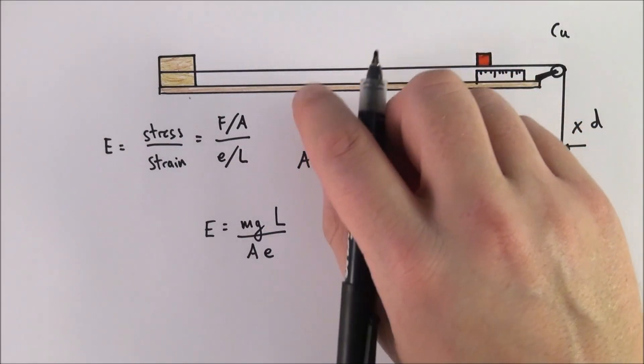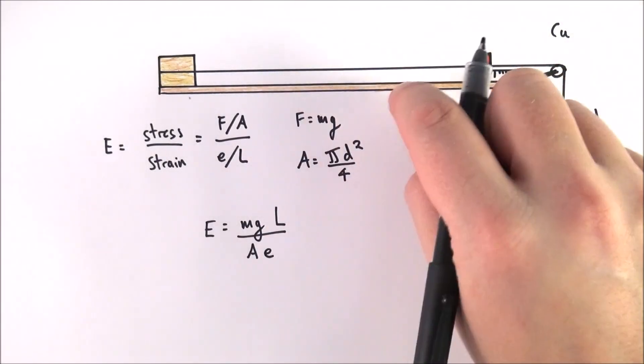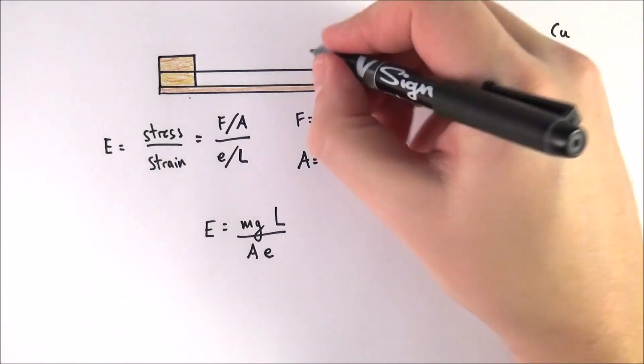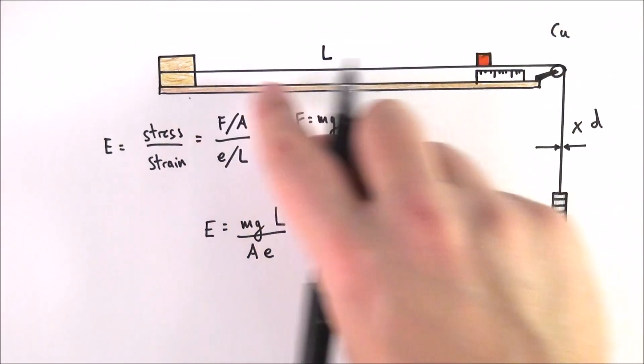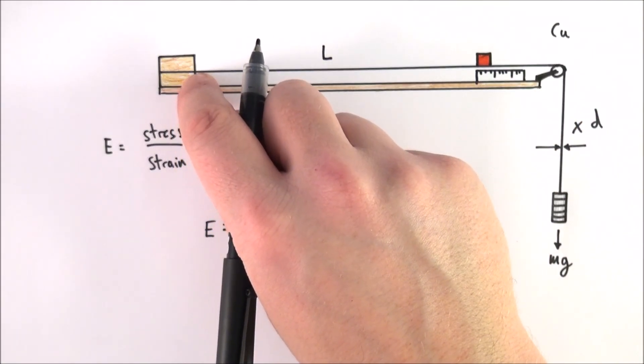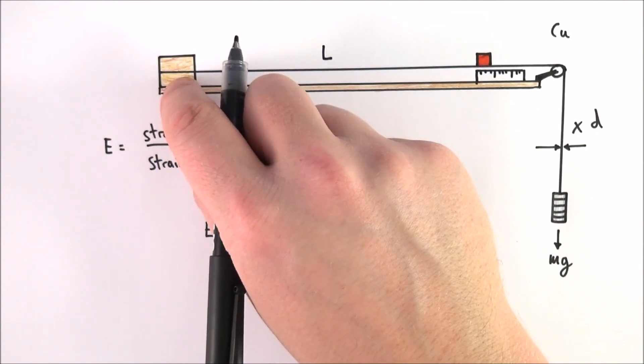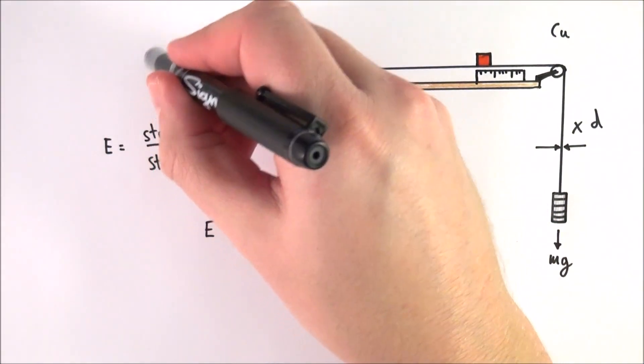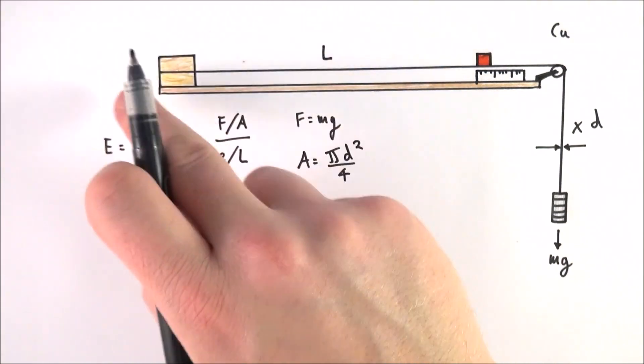So in terms of the equipment setup it's going to be set up on a long tabletop. And the key thing that will get you the best results is to make your value of L as long as possible. And L is the distance between where you clamp the wire at one end using a couple of blocks of wood that you then kind of G clamp onto the desk. And you've got to maybe wrap the wire a couple of times around the end to actually stop it sliding through.